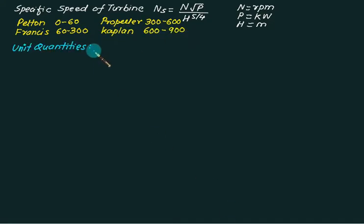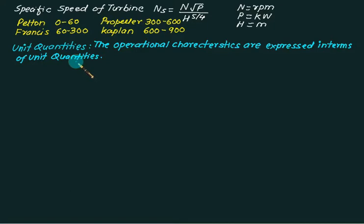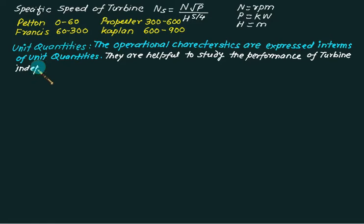The operational characteristics of hydraulic turbines are expressed in terms of unit quantity. These quantities will help us to study the performance of turbine independent of the actual head, the speed discharge and power.